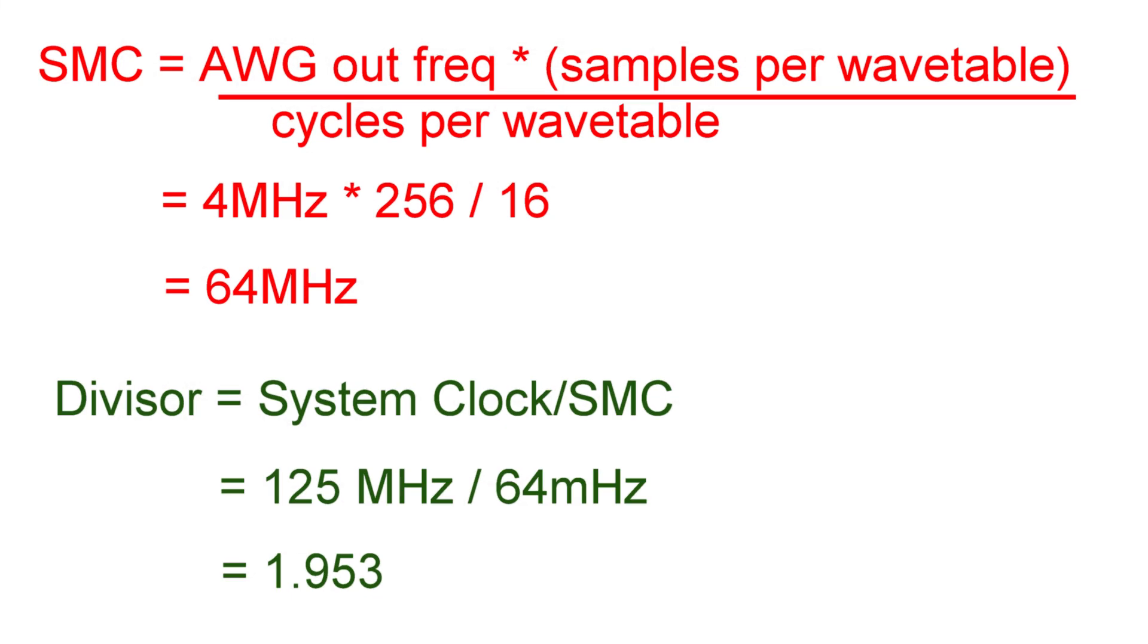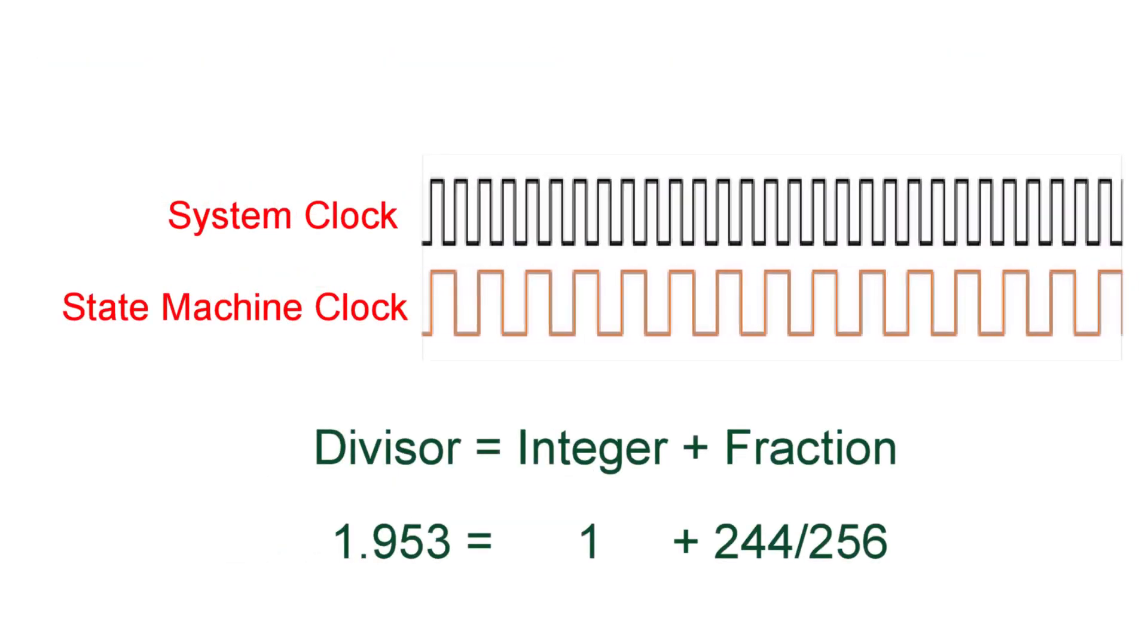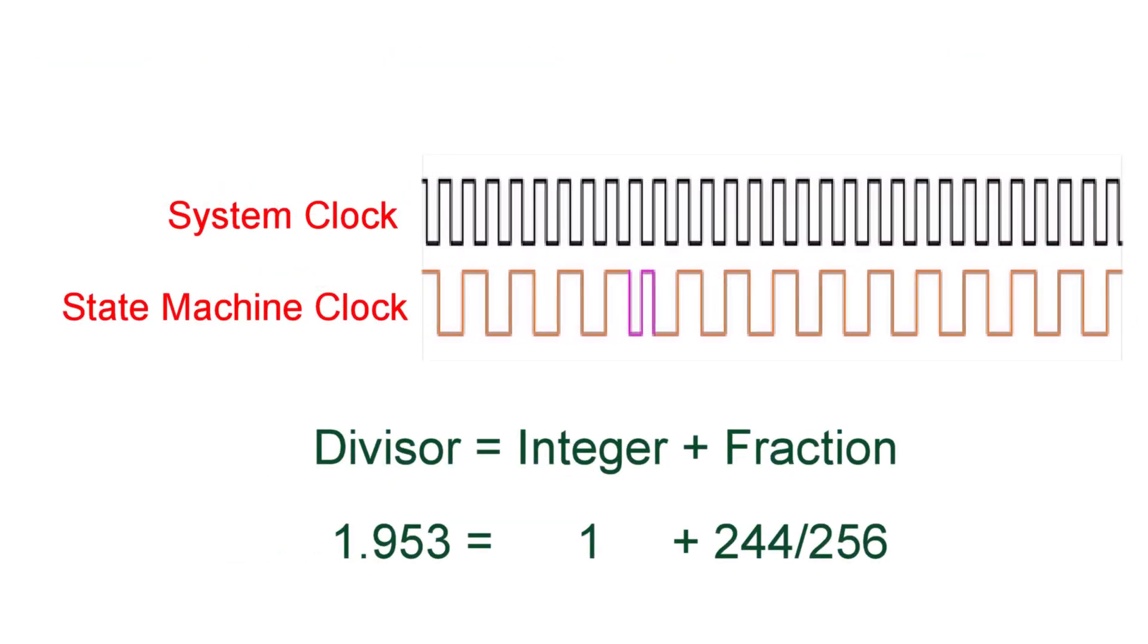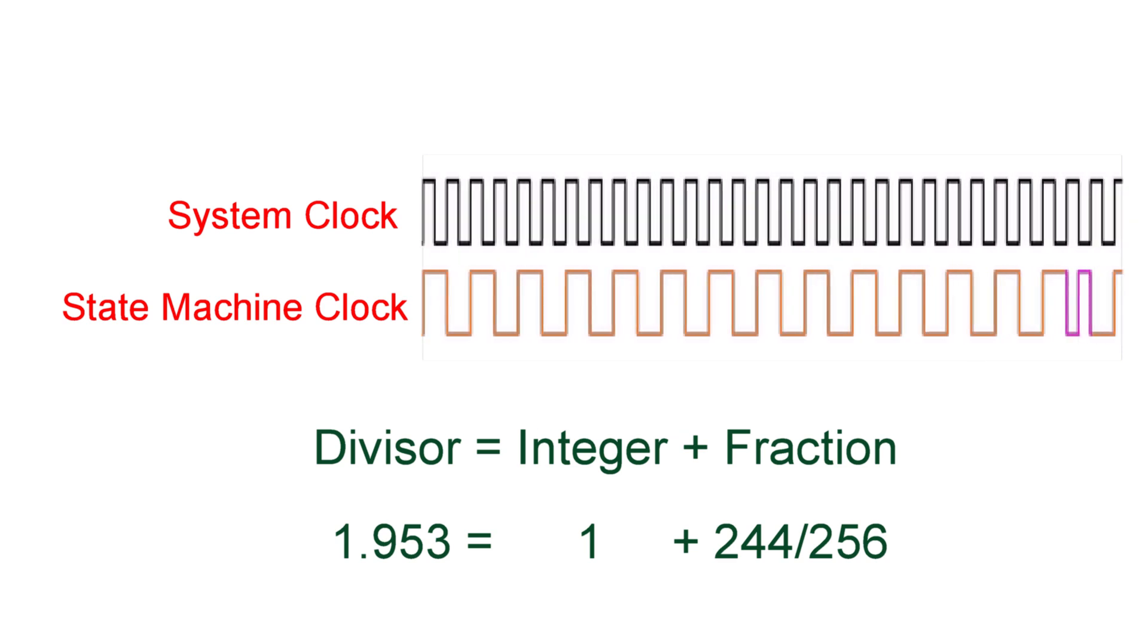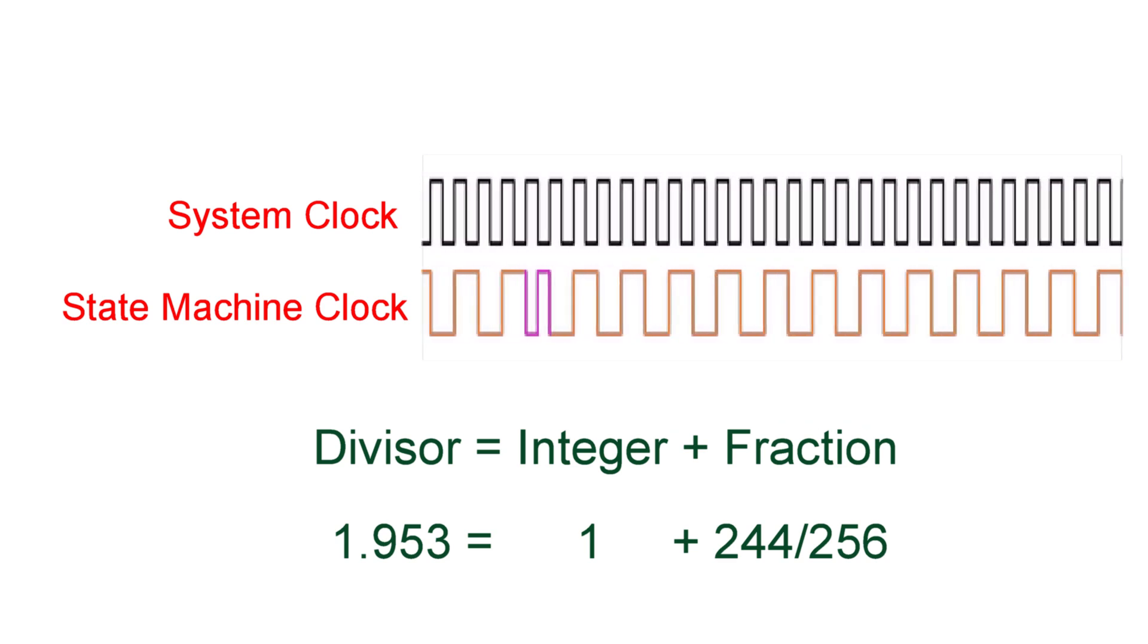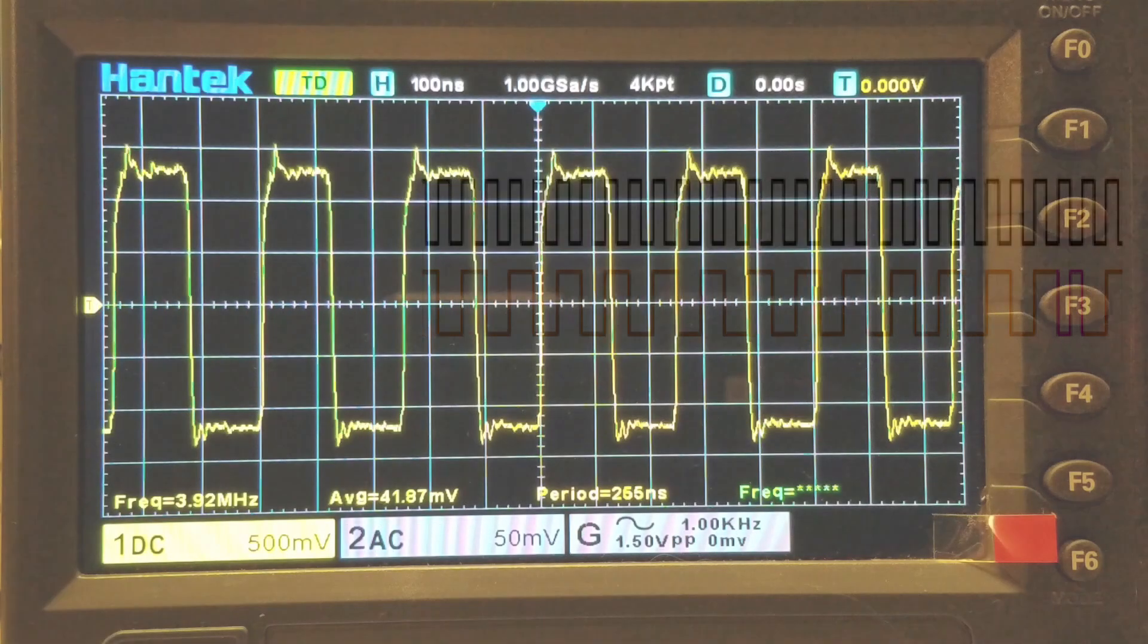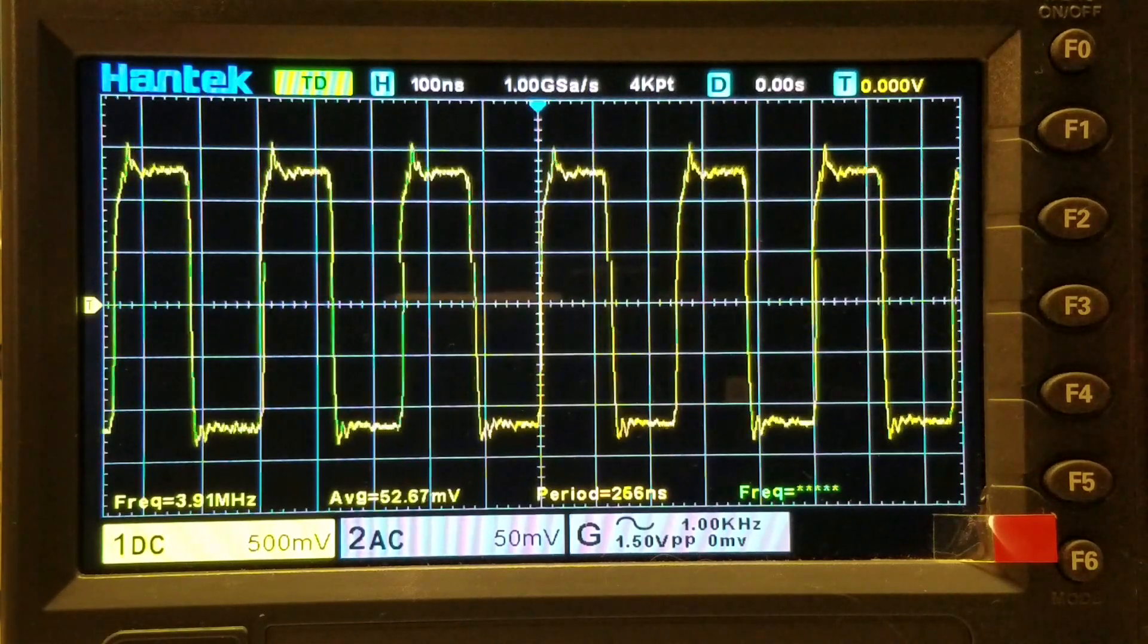In this example, when generating a 4 megahertz wave, we need a divisor of 1.953, which will produce a shorter state machine clock pulse every 22 pulses. This is most noticeable when observing a square wave, but I also saw it while displaying a sine wave.